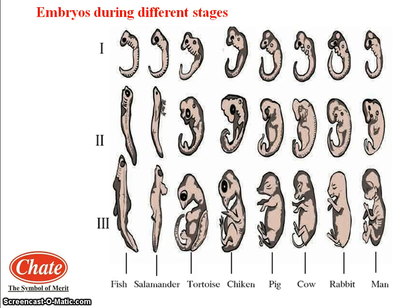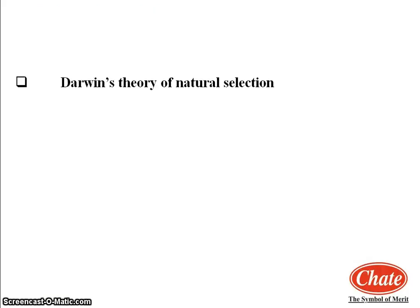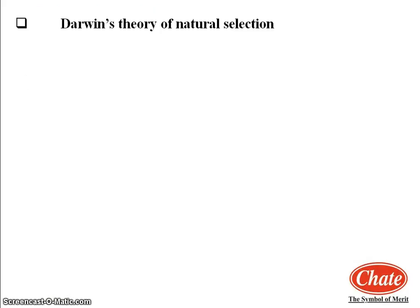In short, embryology is the science which deals with the study of development of an organism from an embryo. Up to here, we have studied six evidences regarding evolution. Now in the next point, we will study the theories proposed by scientists. The first theory is Darwin's theory of natural selection.